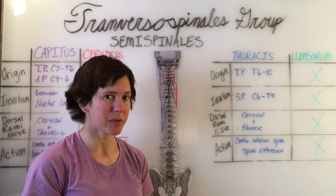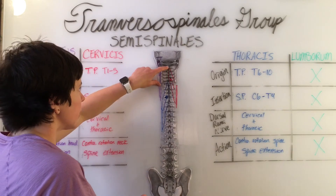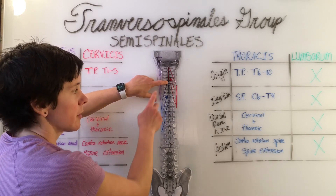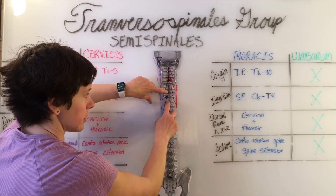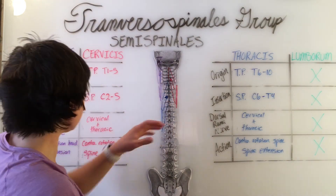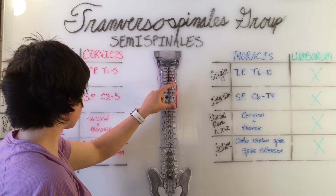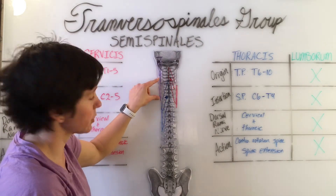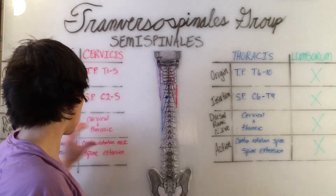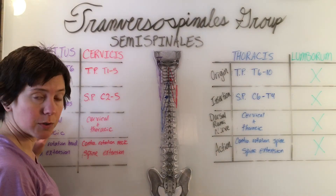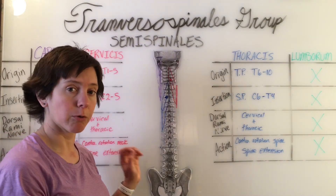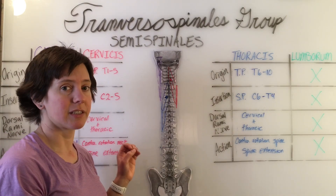To see some similarities in these three muscles: the insertion of the cervicis ends where the insertion of the thoracis is, so it's a continuation along the spinous processes all the way down, with the capitis and the cervicis being a continuation on the transverse processes through the thoracis muscles. They all have the same innervation of cervical and thoracic dorsal rami nerves, and they all perform contralateral rotation and spine extension.